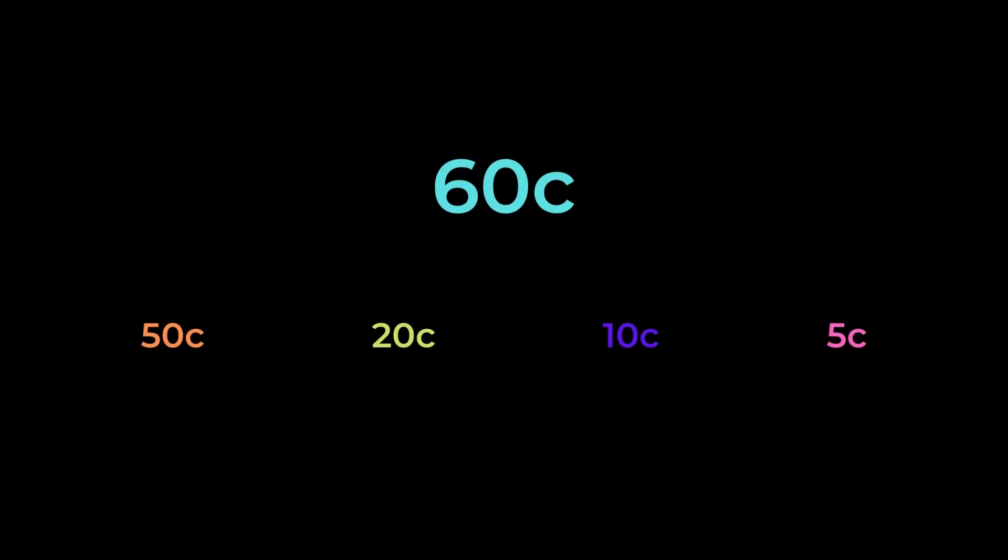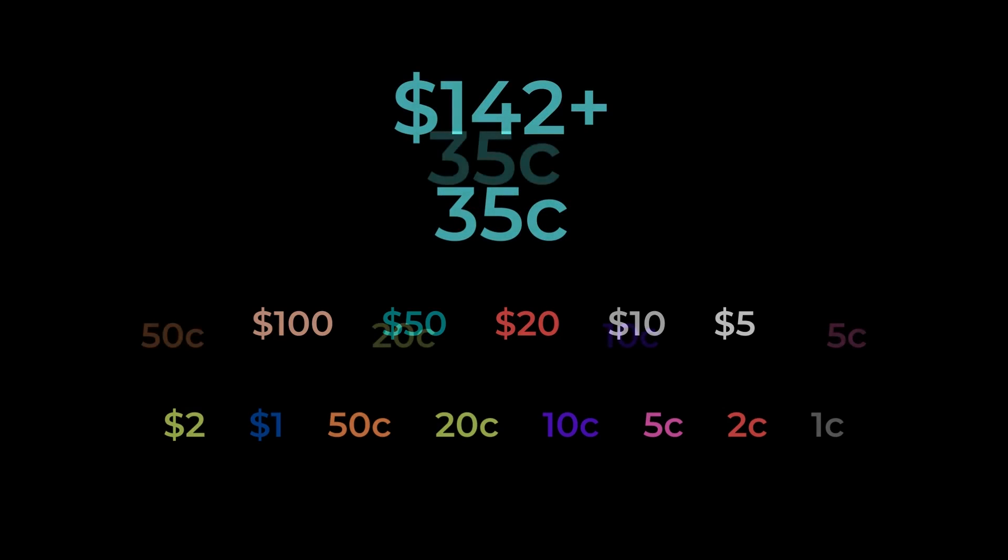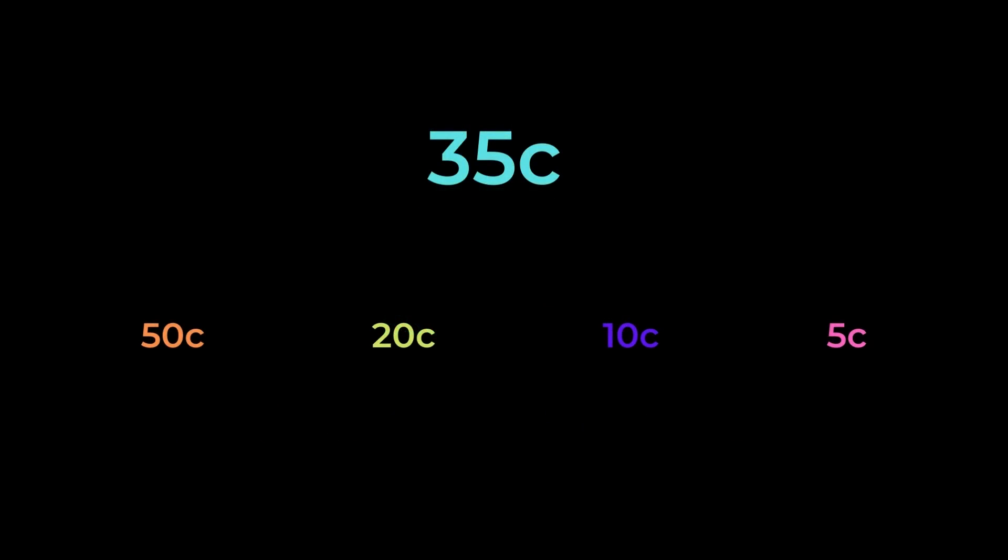Dynamic programming solves this problem by breaking down the larger problem into smaller sub-problems. If we know how to make change for 50 cents, it's quite trivial to make change for 60 cents, and this pattern continues. If we could make change for 142 dollars, then to make change for 142 dollars and 35 cents, it's no longer a daunting task. It's just as easy as making change for 35 cents.